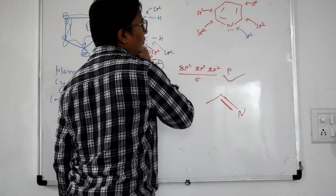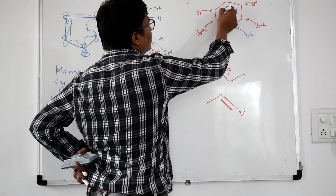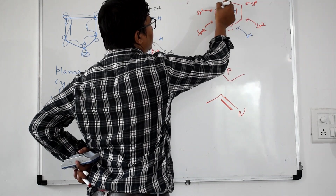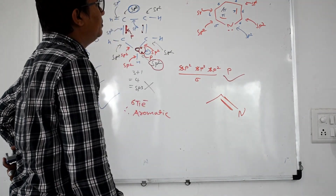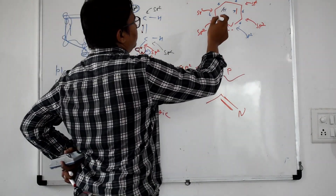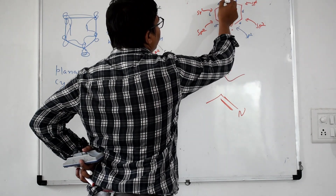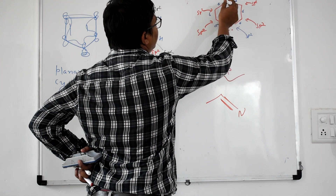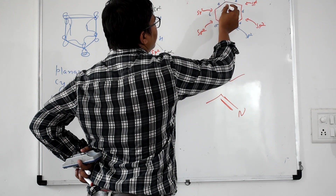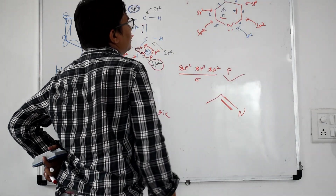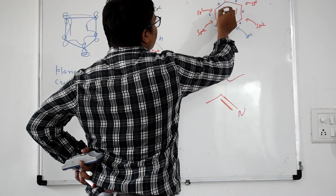Starting with the nitrogen atom — the pi bonds and sigma bonds are identified. The sigma bonds are made by sp2 hybrid orbitals. Each atom has three sp2 hybrid orbitals and one p orbital. The p orbitals form the pi bonds. So these six electrons are the pi electrons from the ring's pi system.